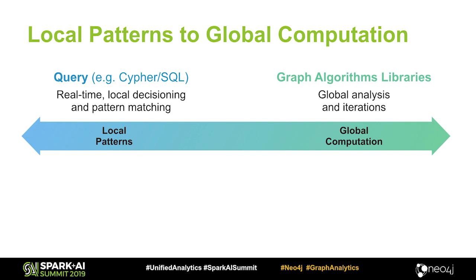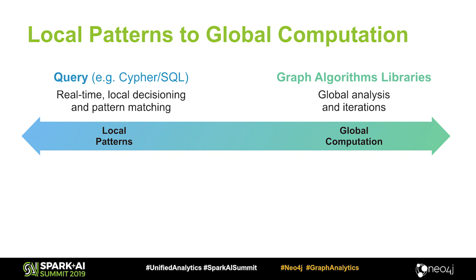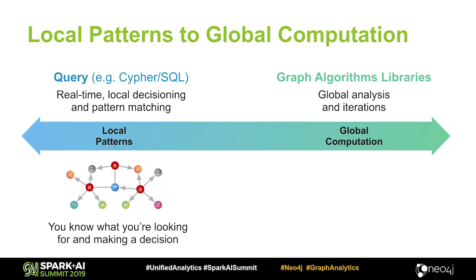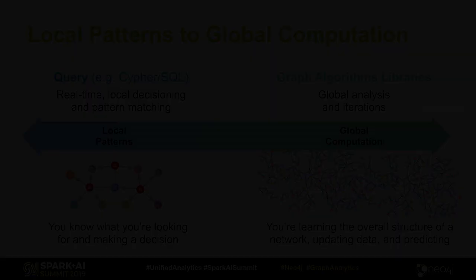If you want to extract data from your graph, you basically end up with two possibilities. On the left is the query side, which means you already know what you are looking for in your graph — you query the graph and get results back. This is a more local view. On the other side, the graph algorithm side, we treat the graph as a global view, essentially trying to find out what the graph looks like: what are the key nodes, what are important nodes, and what is the overall structure of the graph.